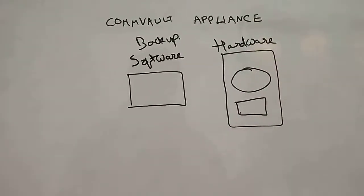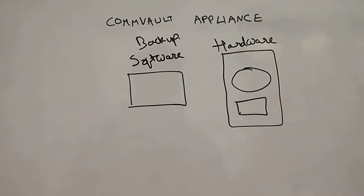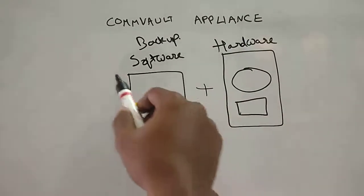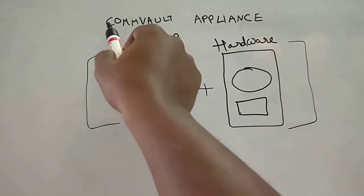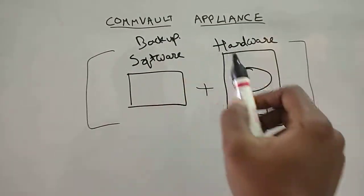Now things have come up a little advanced. Why not give hardware as well along with the software? So both of them together are called an appliance. The vendor Commvault himself will sell you the backup software along with the hardware.